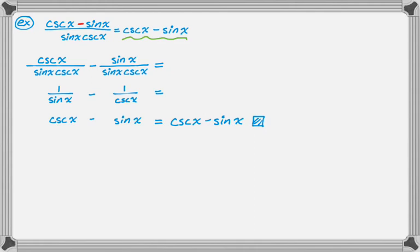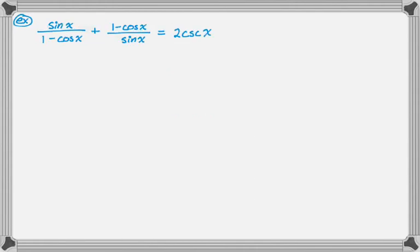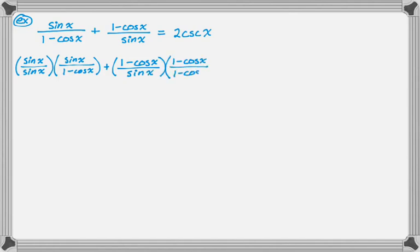Let's take a look at another one. In that problem we had one fraction, we broke it up into two and went from there. In this example we actually have two fractions: sine over one minus cosine plus one minus cosine over sine is equal to two cosecant of x. It's going to be much easier to turn the left into the right. I see two fractions. The only thing I'm thinking here is let's get a common denominator and see what happens. I'm going to need to multiply the left-hand fraction by sine over sine, and I need to multiply the right-hand fraction by one minus cosine over one minus cosine.